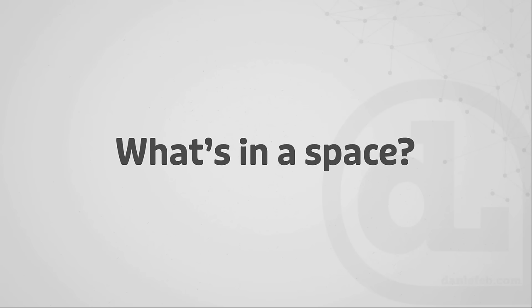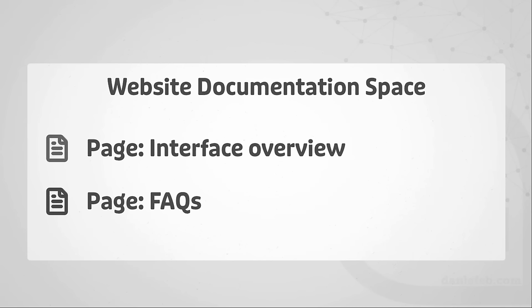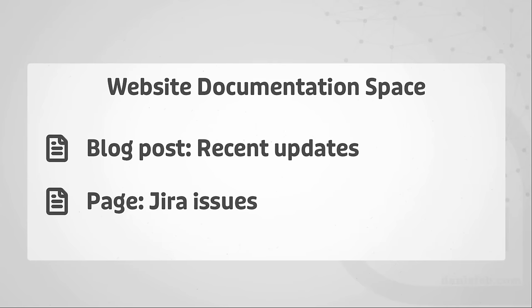Just like Jira uses projects to hold issues, in Confluence it's the pages that hold our content, and those pages live in the spaces. For example, let's say we have a website documentation space. We could have a page with an overview of the interface, another page with frequently asked questions, images on the interface overview, text on our FAQs, maybe a blog post with recent updates. We could even have a page that pulls in Jira issues showing current bugs on the website using macros.